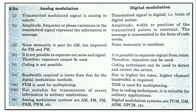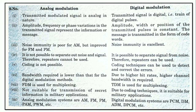Therefore, repeaters cannot be used in analog modulation. In digital modulation, it is possible to separate the signal from the noise, so repeaters can be used — because we can separate the noise from the signal.